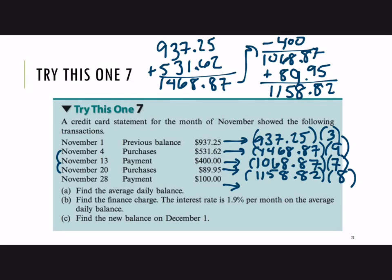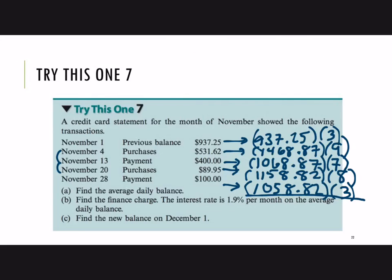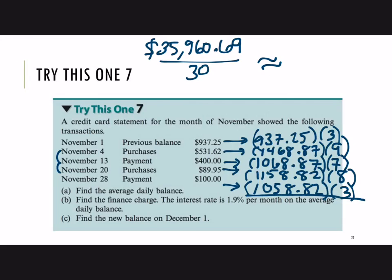Then on the 28th, a payment of $100 is made, giving a balance of $1,058.82, which is carried to the end of the month. Since November has 30 days, the 28th through 30th is three days. To find the average daily balance, multiply each balance by its number of days and add to find the total — $35,960.69. Then divide by 30 to get the average daily balance, which rounds to about $1,198.69.